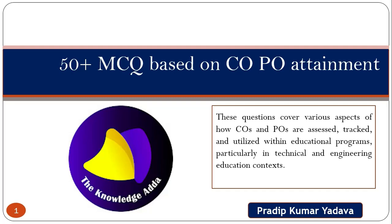These questions cover various aspects of how COs and POs are assessed, tracked and utilized within the educational program, particularly in technical and engineering education contexts. CO and PO attainment is applicable for all types of programs, but majorly it covers engineering and technical programs like MBA, BBA, and BTech. We can also implement it in science programs, humanities programs — every program we can implement CO and PO attainment. My main focus in this video is to cover all theoretical aspects regarding CO and PO attainment.